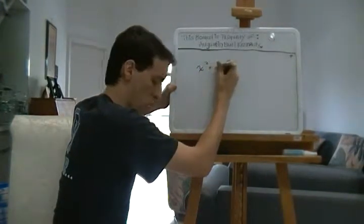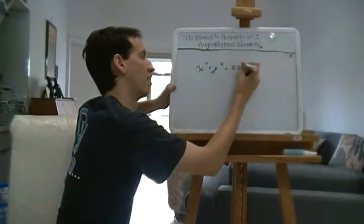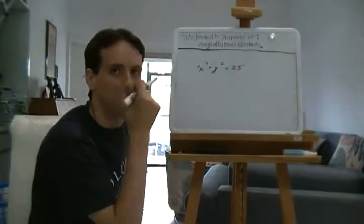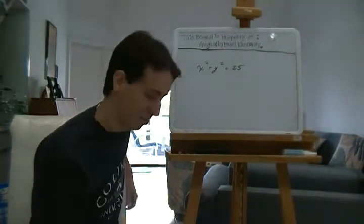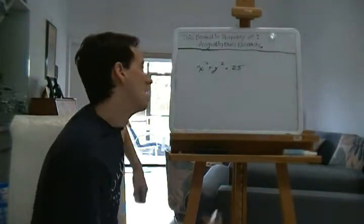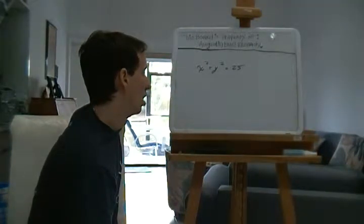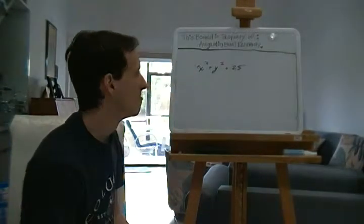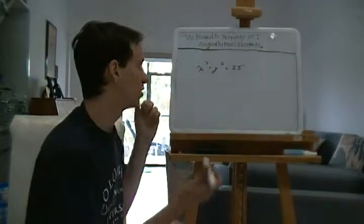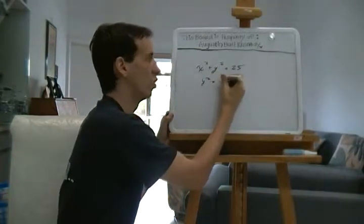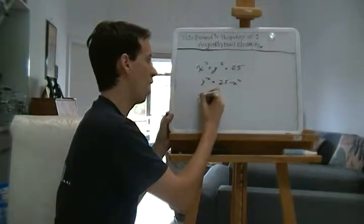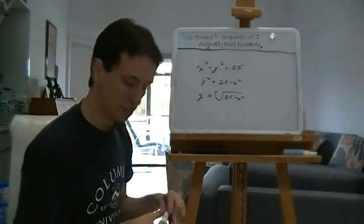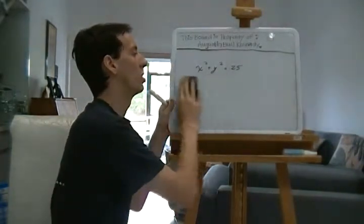x squared plus y squared equals 25. You might recognize this as a circle, and you might be thinking, 'Why are we working with this? That's not a function.' But there's a reason — you'll find out probably in chapter 10 or so. It's kind of hard to differentiate because we've got y squared in there. We'd have to rewrite as y equals plus or minus the square root of 25 minus x squared, and that's not going to be easy to differentiate. So we try implicit differentiation.